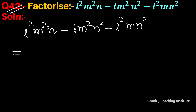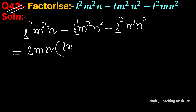In all three terms, we check what is common. l has at least power 1 in all three terms, so l is common. m has at least power 1 in all three terms, so m is common. n also has at least power 1, so l, m, and n are all common. The first term gives l and m, the second term gives m and n, and the last term gives l and n. Answer.